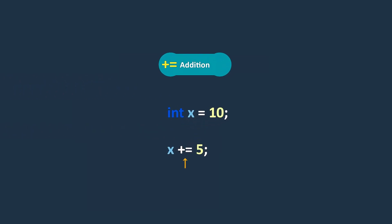The addition assignment operator adds the value on the right-hand side to the variable on the left-hand side and assigns the result to the variable. For example, the expression x += 5 is a shorthand notation of x = x + 5. So the value of x is incremented by 5 and its value would be 15.